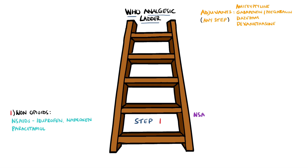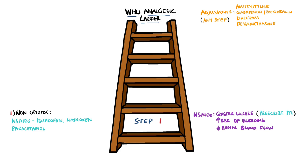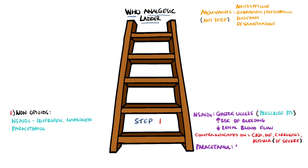Side effects of NSAIDs include gastric ulcers, so you may prescribe them alongside a proton pump inhibitor, an increased risk of bleeding, as well as a reduction of renal blood flow. Contraindications therefore include people with chronic kidney disease, cirrhosis, heart failure, and bear in mind that they may exacerbate asthma. Paracetamol is contraindicated in patients with liver damage and in severely undernourished patients.